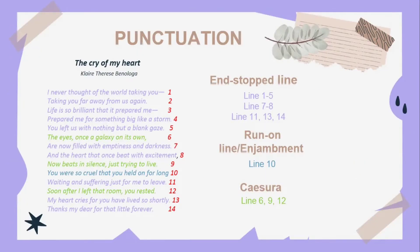Now for the punctuation in the poem, we can find end-stop line, run-on line or enjambment, and caesura. For the end-stop line, we have lines 1 to 5, then lines 7 to 8, line 11, line 13, and 14. As you can see, it is colored in violet or purple. That is the end-stop line because the punctuation is at the end of the line.